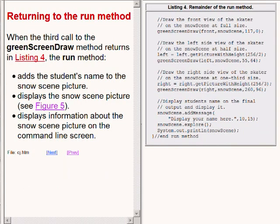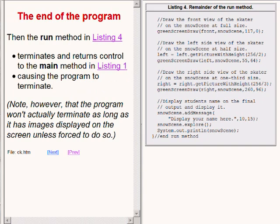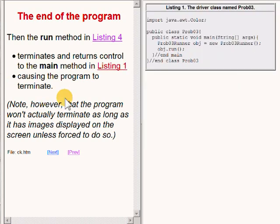Returning now to the run method on the right of your screen. When the third call to the greenScreenDraw method returns, this code adds the student's name to the snow scene picture, displays the snow scene picture in a Picture Explorer object, and displays some information about the snow scene on the command line screen. Then the run method terminates and returns control to the main method. Because the main method has nothing further to do, it and the program terminate and return control to the operating system as soon as the user removes the images from the screen.